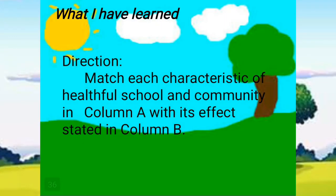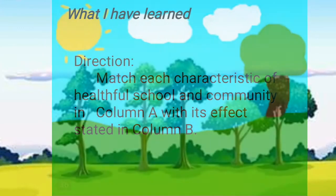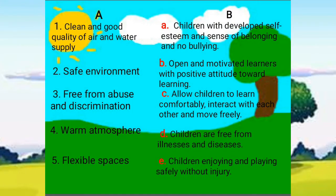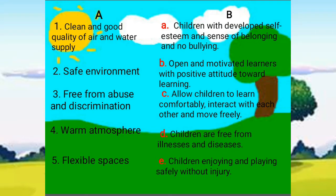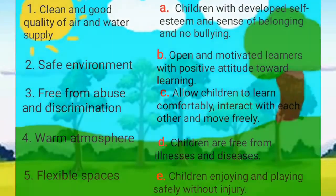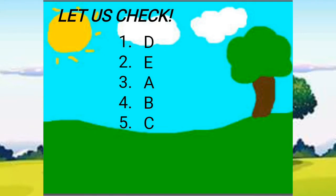Another activity: match each characteristic of healthful school and community in Column A with its effects stated in Column B. Number 1: clean and good quality of air and water supply. Number 2: safe environment. Number 3: free from abuse and discrimination. Number 4: warm atmosphere. Number 5: flexible spaces. Let us check your answers: number 1 is D, number 2 is E, number 3 is A, number 4 is B, and number 5 is C.